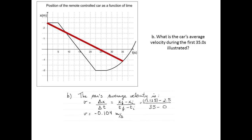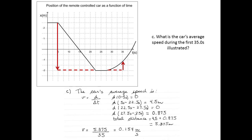This makes sense because the car's final position is behind its initial position. Now for average speed: average speed is the distance traveled over time. From 0 to 5 seconds, no distance was traveled. From 5 to 22.5 seconds, 4.5 meters were traveled backwards. From 22.5 to 27.5 seconds, there was no displacement. From 27.5 to 35 seconds, 0.875 meters were traveled. The total distance, taking the absolute value of all displacements, is 5.375 meters. Dividing by 35 seconds gives 15.4 centimeters per second.